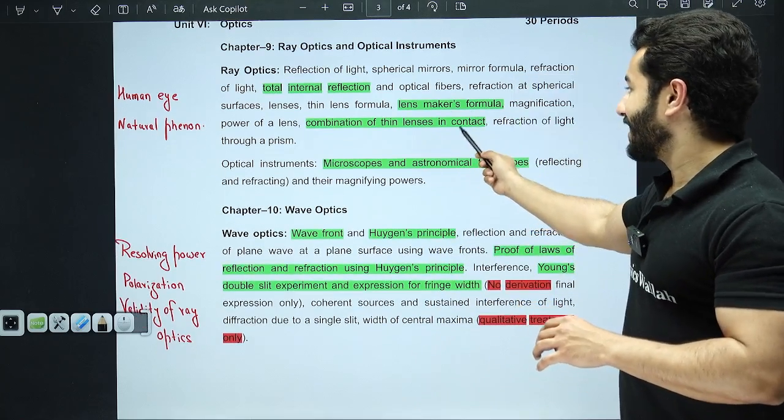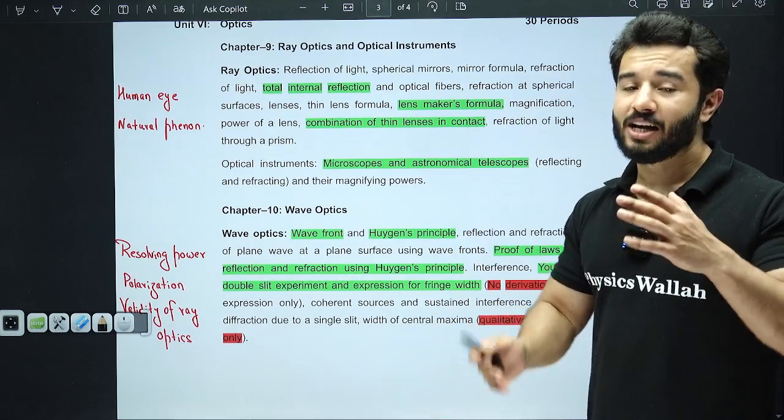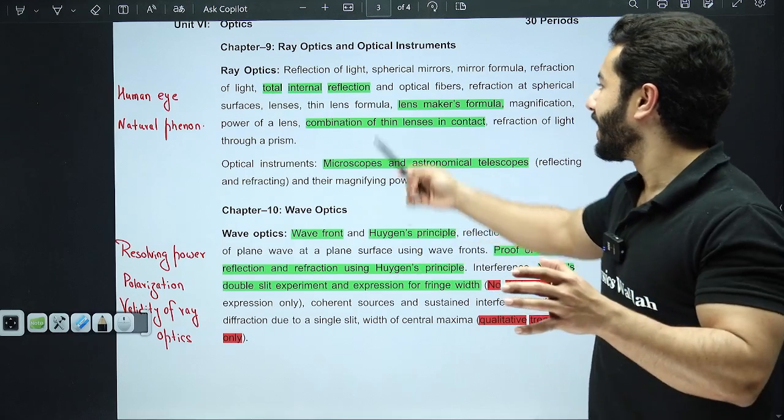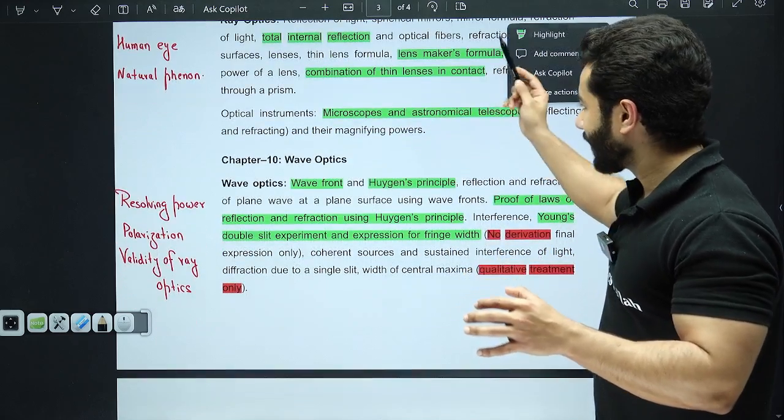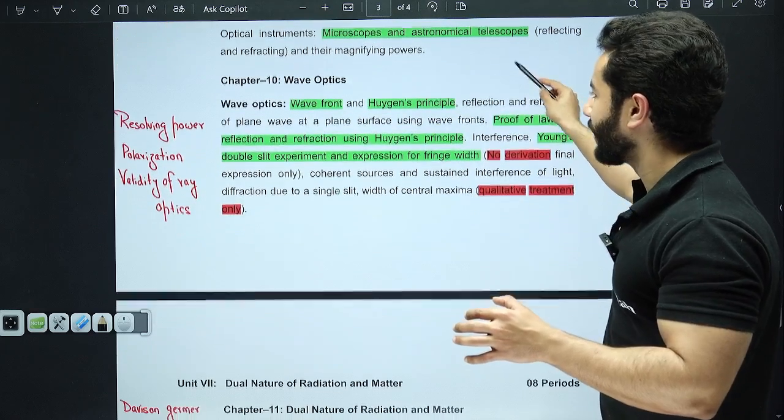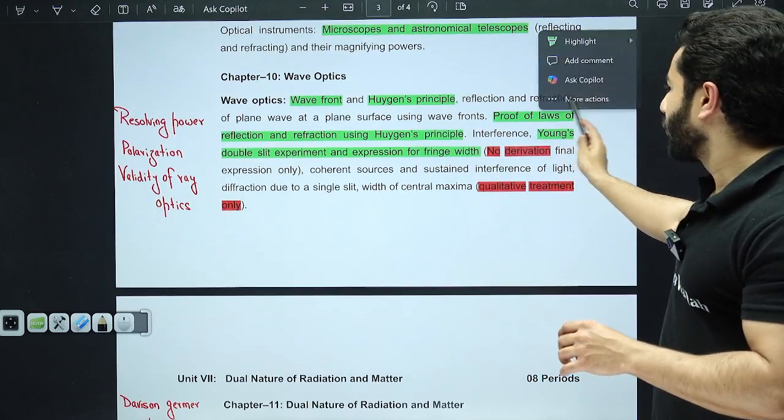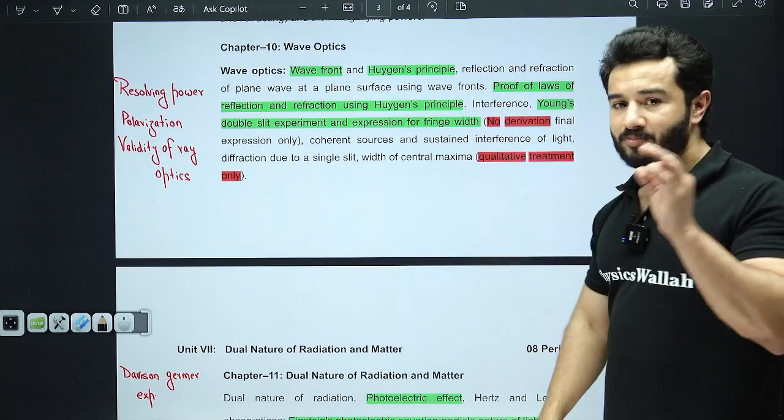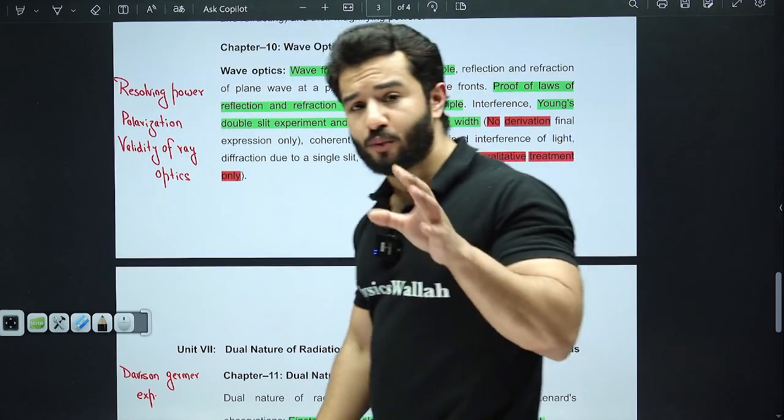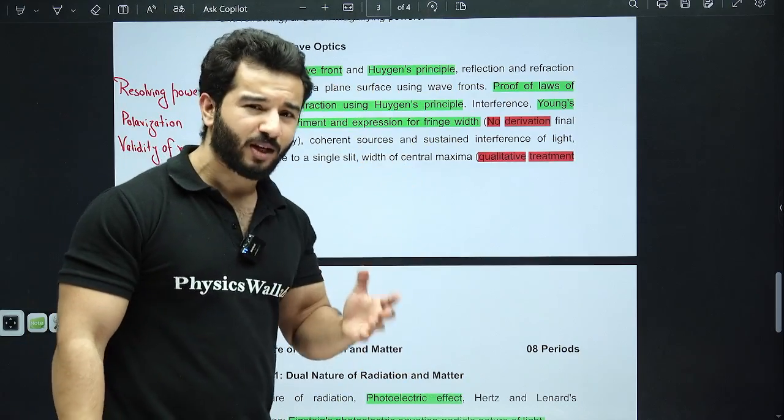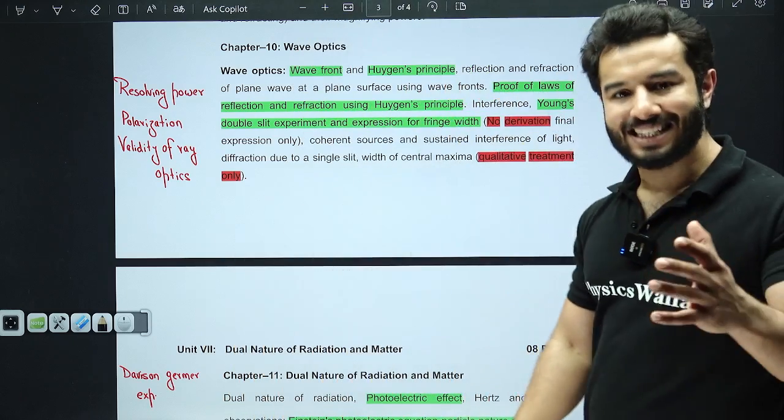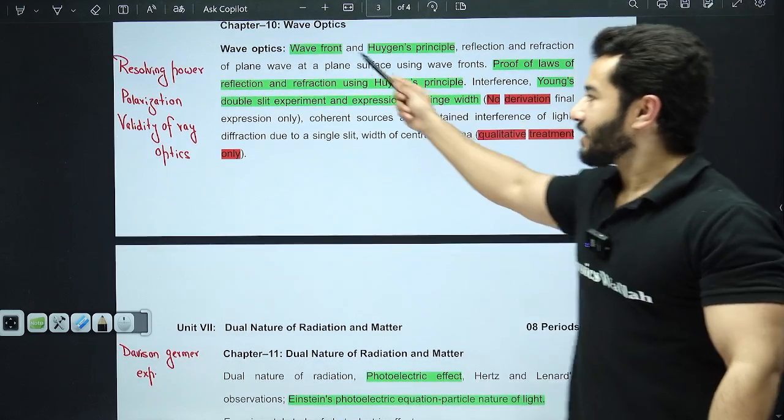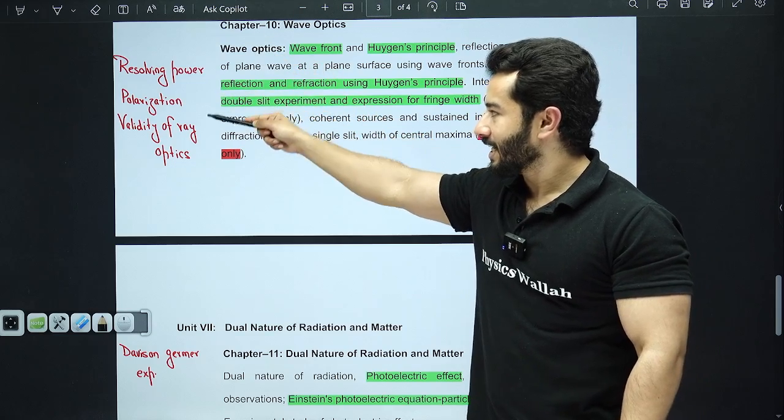From optics, human eye has been deleted. Natural phenomena regarding atmospheric refraction has been deleted. Combination of thin lenses in contact is in your course and it is important, whereas combination of lenses at certain distances has been deleted. TIR is important, lens maker formula is important, microscope and astronomical telescopes is important. From wave optics, Huygens principle is important, proof of laws of reflection and refraction using Huygens principle is important.